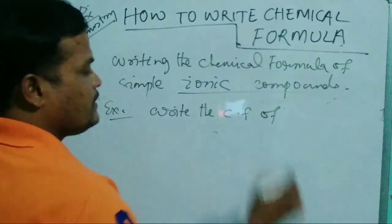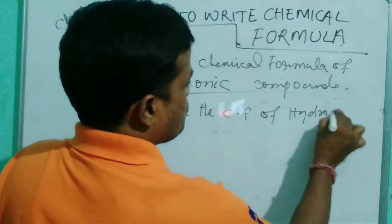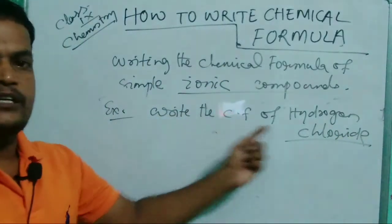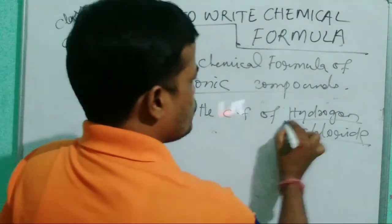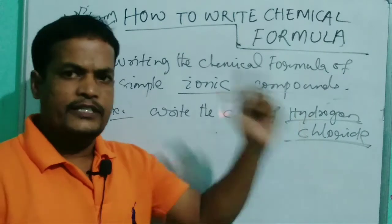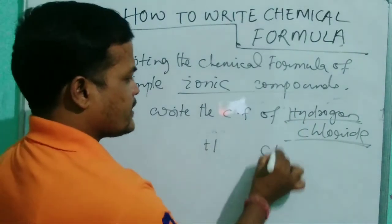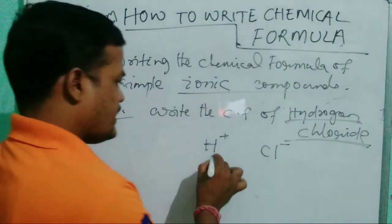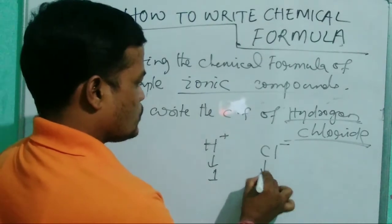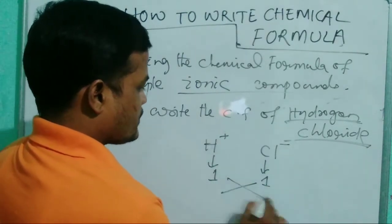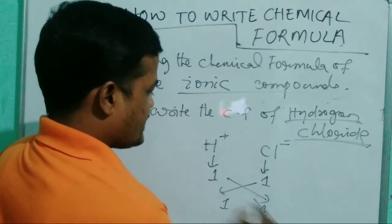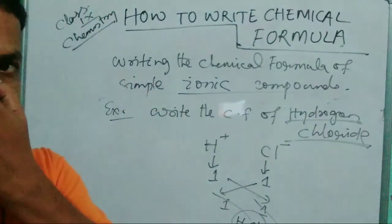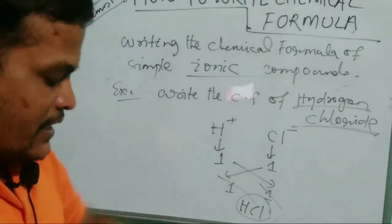Let us write the chemical formula of hydrogen chloride. There are two elements — hydrogen and chlorine. Hydrogen is H+ (cation) and chlorine is Cl− (anion). Write valency 1 for hydrogen and 1 for chlorine. They cancel each other; valency of one is not retained. The chemical formula of hydrogen chloride is HCl.